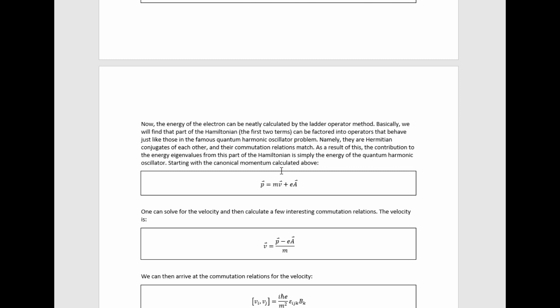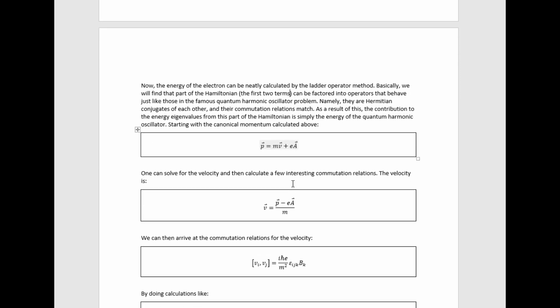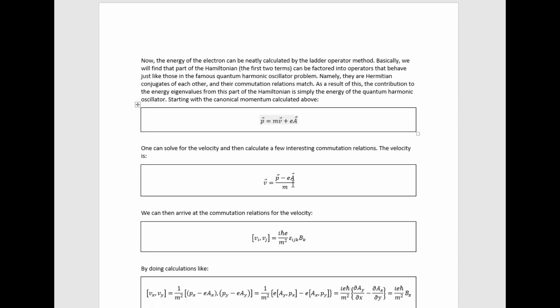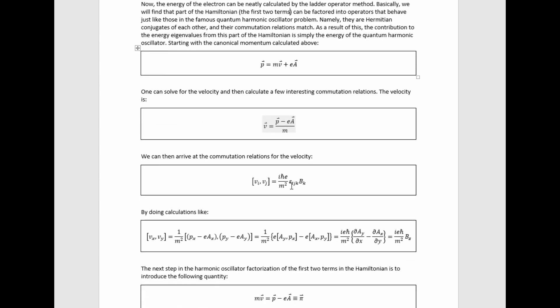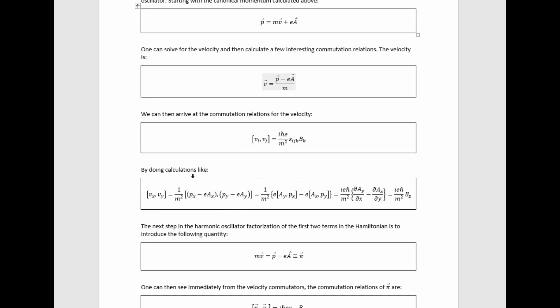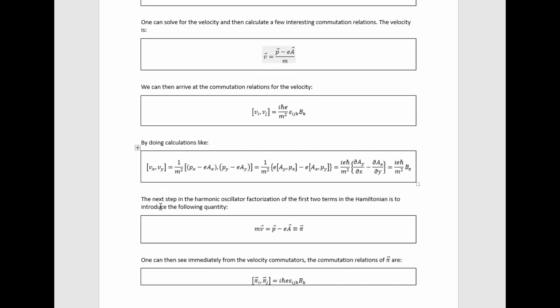Starting with the canonical momentum calculated above, one can solve for the velocity and then calculate a few interesting commutation relations. Subtracting this to the other side and dividing by the mass gives the velocity. Plugging it directly into the commutator and crunching the math gives this value for it. Specifically, it proceeds via three separate calculations that look much like this one, which I did for the XY component of the commutator.